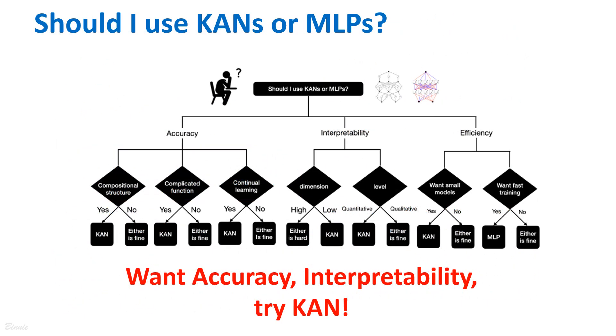Currently, the biggest bottleneck of KAN is their slow training. Training KAN are usually 10 times slower than MLP, given the same number of parameters. However, the authors claim that they have not tried hard to optimize KAN efficiency, therefore the slow training of KAN is seen more as an engineering problem to be improved in the future rather than a fundamental limitation.